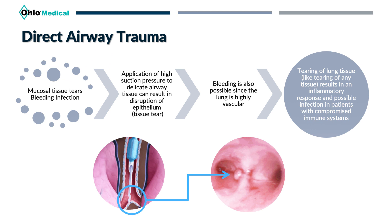You can see the ulcerations from a photograph taken from a bronchoscopy on the right. When we apply suction pressure and withdraw the catheter while it's actually adhered to the tracheal tissue, it can cause a tear or ulceration. Because the airway is highly vascular, bleeding is also likely to occur, and due to this injury the inflammatory response begins, which can lead to infections as well. In my practice I've frequently seen patients requiring intubation and mechanical ventilation develop blood-tinged sputum, especially if they've been intubated for several days — likely due to over-suctioning over that period of time.